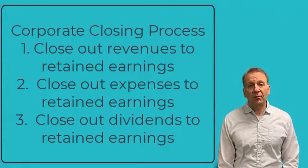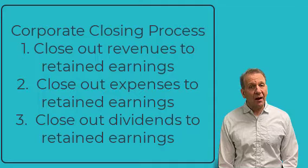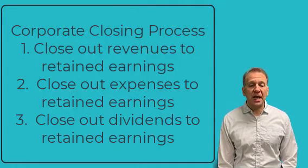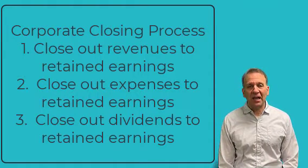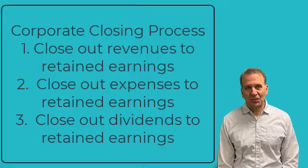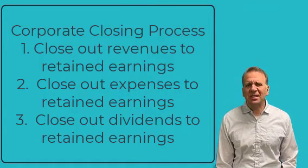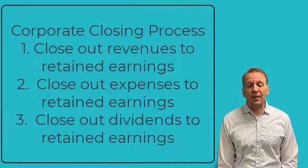Step four — which would actually be step three for a corporation — would close out not the withdrawal account but dividends, since that's what corporations use instead. Dividends would be closed out by debiting retained earnings and crediting the dividends account. So it's very similar; the accounts are just slightly different. Instead of income summary, revenues, expenses, and dividends are closed out directly to retained earnings.